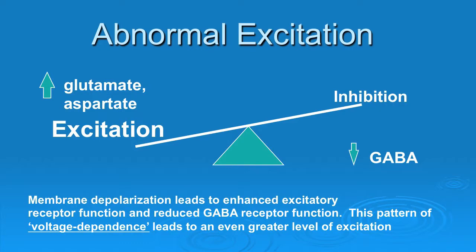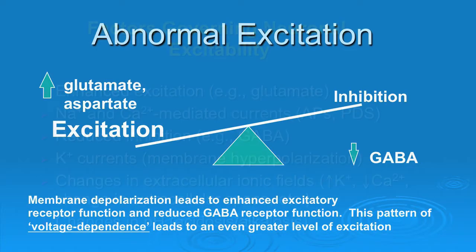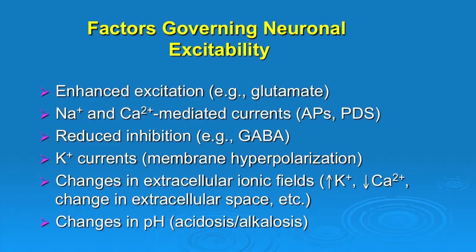Our goal with antiepileptic drug therapy is to try to bring these forces back into balance or modulate these various neurotransmitter systems. When we look at the factors governing neuronal excitability, there is either enhanced excitation — perhaps an alteration in action potential currents mediated by calcium or sodium — or reduced inhibition through some alteration of the GABA system. Potassium currents are important for maintaining membrane hyperpolarization and represent a relatively newer target for antiepileptic drug therapy. There may also be changes in extracellular ionic fields, either potassium or calcium.